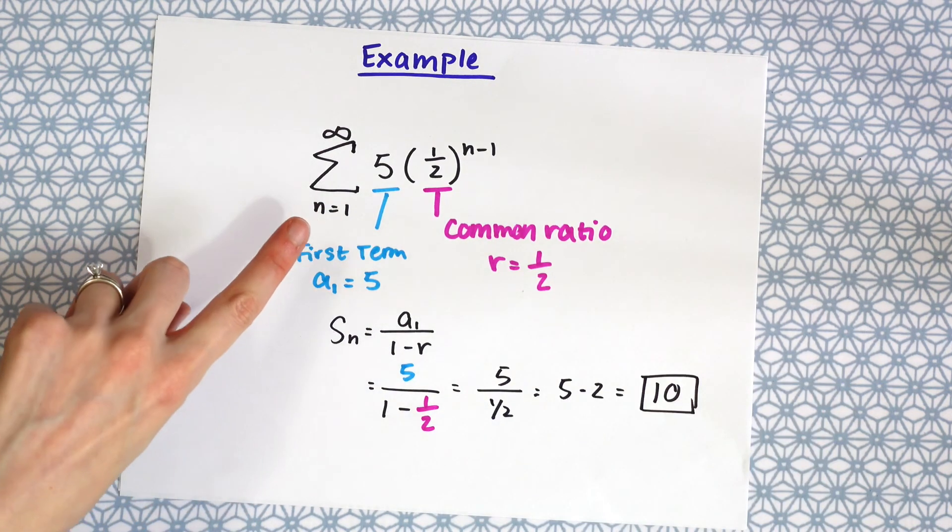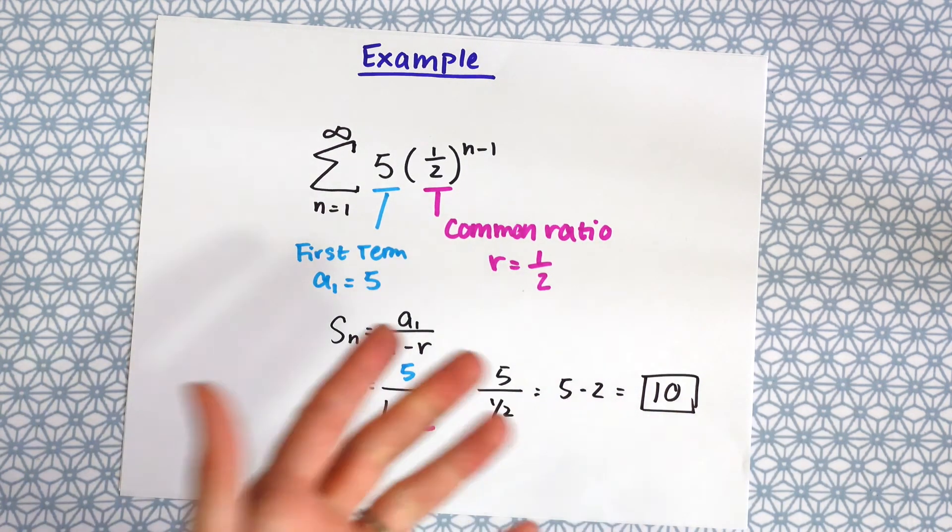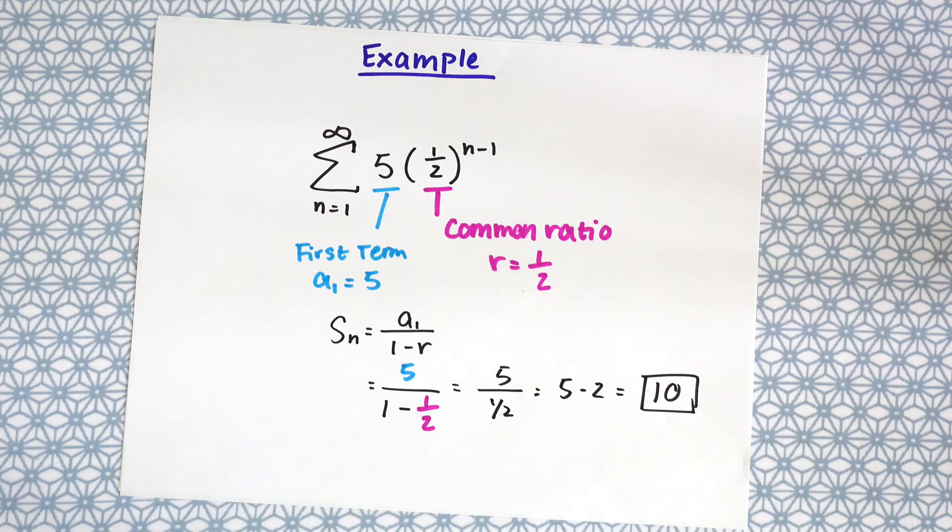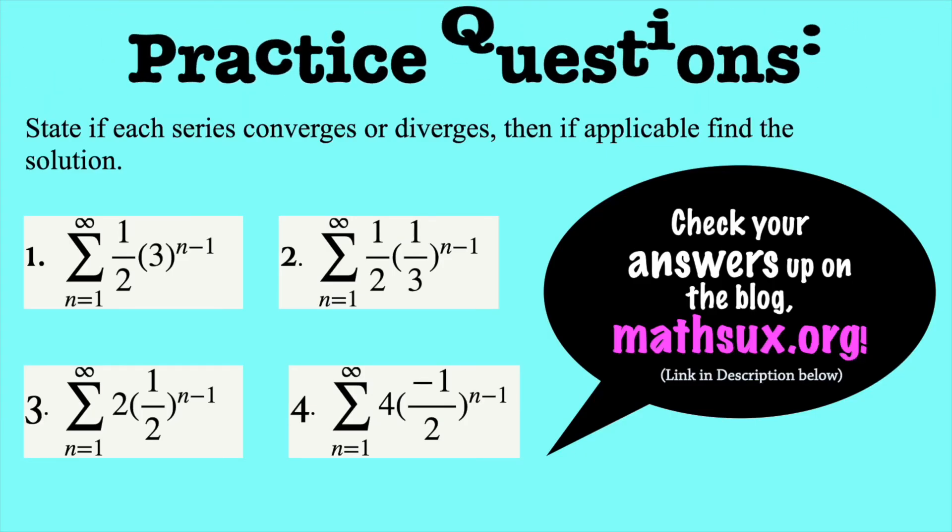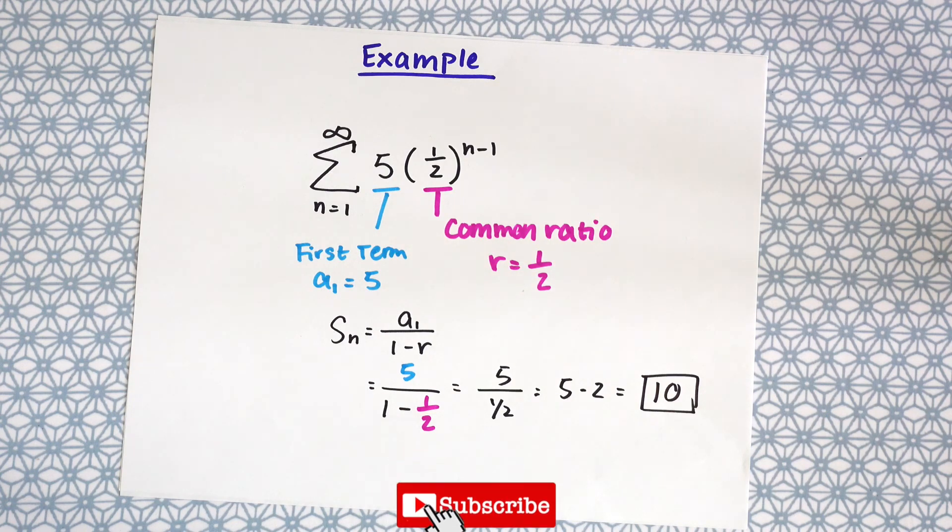The sum of this infinite geometric series is 10. So it's nice that it comes to this nice number here. If you're looking for more, check out the practice questions right here. The answers are up on my blog, MathSucks.org, and in the description below. And if this video helped you, please give it a like and subscribe. Thanks so much for stopping by and happy calculating.